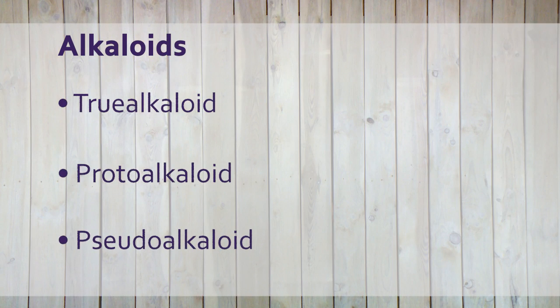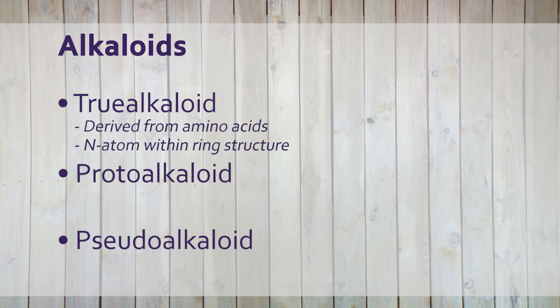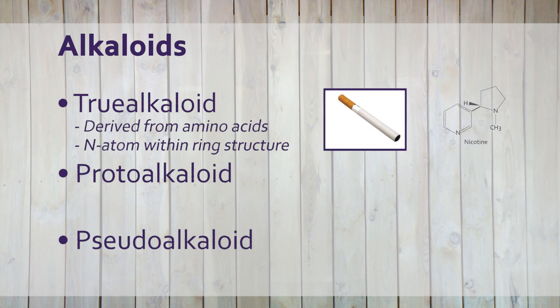The true alkaloids are made from amino acids and have a nitrogen atom incorporated in their ring structure. Well known examples are nicotine and morphine.